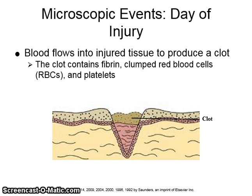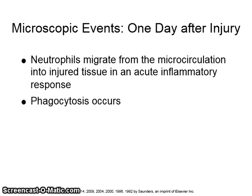On the day of injury, blood flows into the injured tissue to produce a clot. The clot contains fibrin, clumped red blood cells, and platelets. The day after the injury, neutrophils migrate from the microcirculation into the injured tissue in an acute inflammatory response. Phagocytosis then occurs.